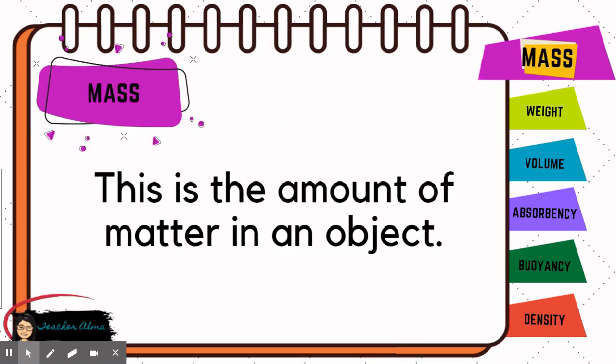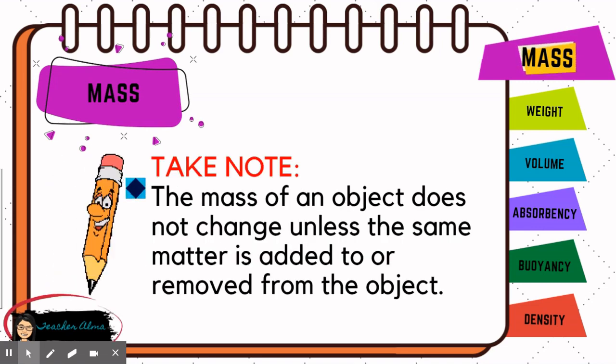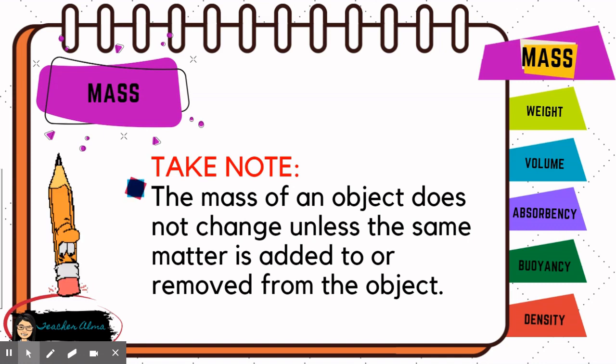Mass is a property of an object that quantifies the amount of matter in that certain object. Take note that the mass of an object does not change unless the same matter is added to or removed from the object.